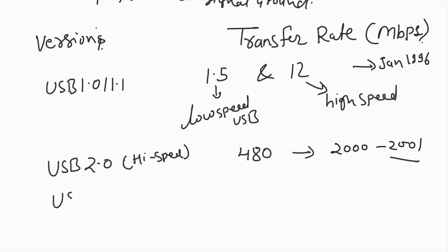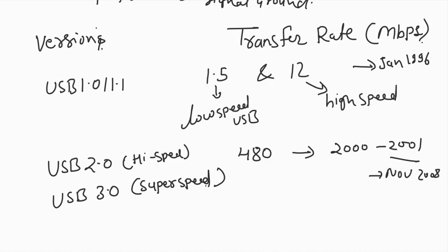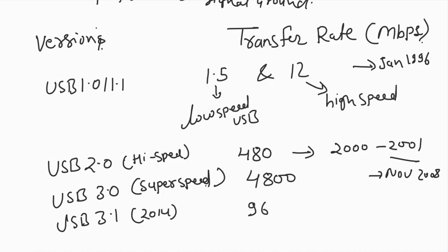After that, USB 3.0 came — this version is called super speed. It arrived around November 2008, and the speed it offered increased dramatically to 4800 Mbps. After USB 3.0 came USB 3.1 around 2014, with a speed of 9960 Mbps, which is truly very high speed.